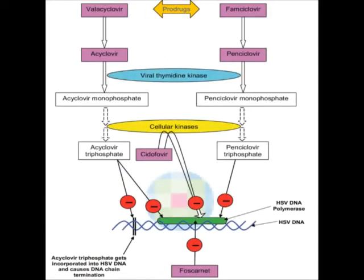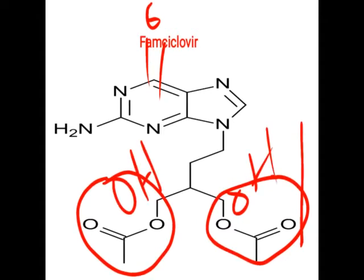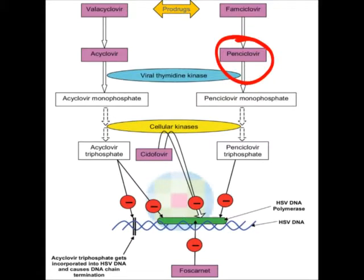Famciclovir is similar to penciclovir but with a thio moiety present. Valacyclovir and famciclovir are prodrugs. Valacyclovir is converted into acyclovir by hydrolysis since it contains an ester. In famciclovir there is also an ester, so hydrolysis takes place along with oxidation to form a double bond, converting it into penciclovir.